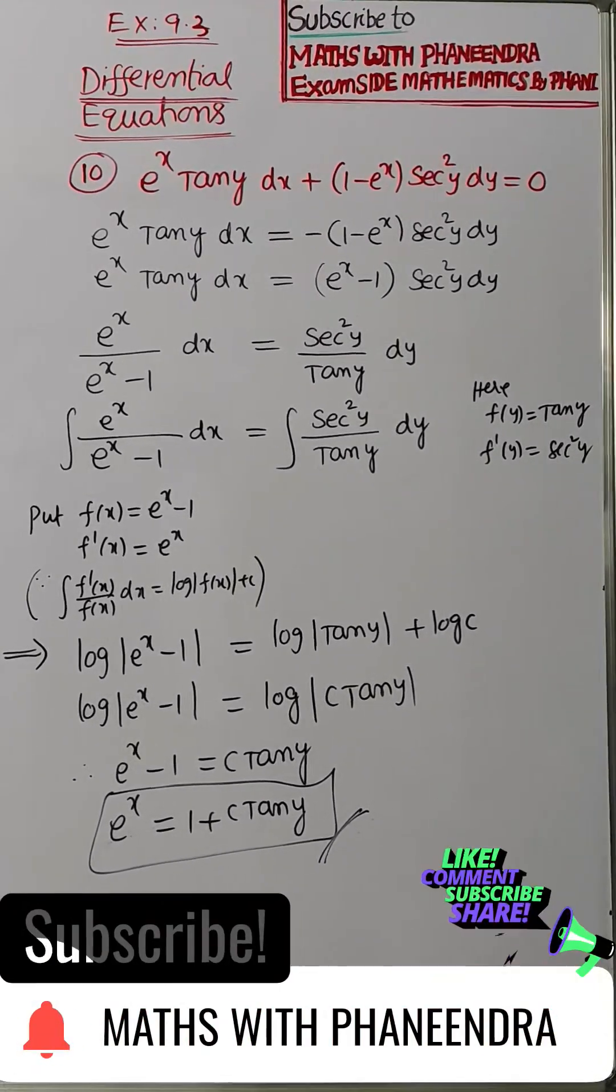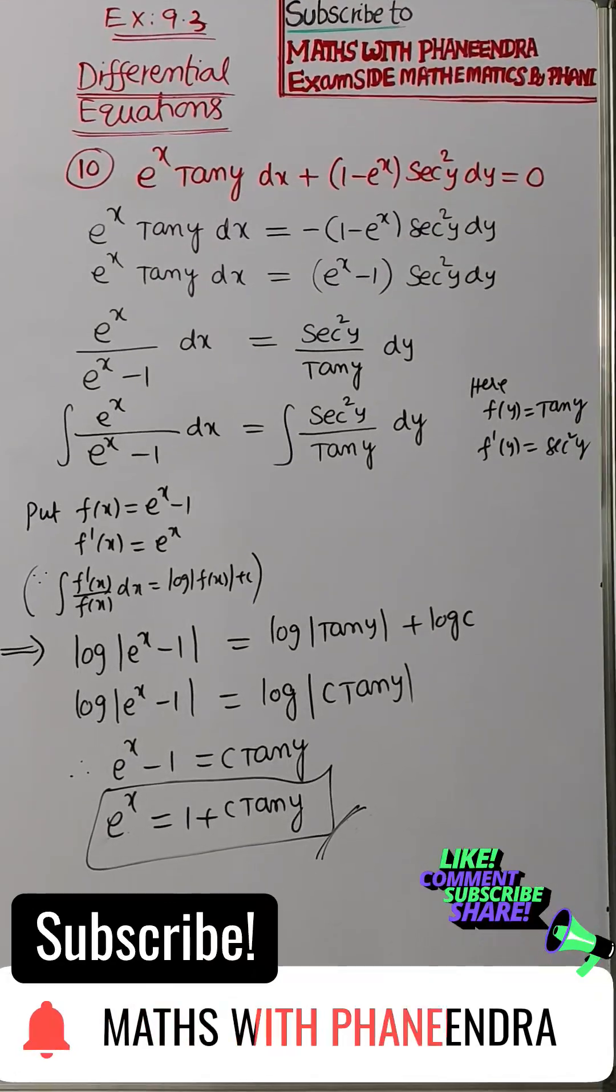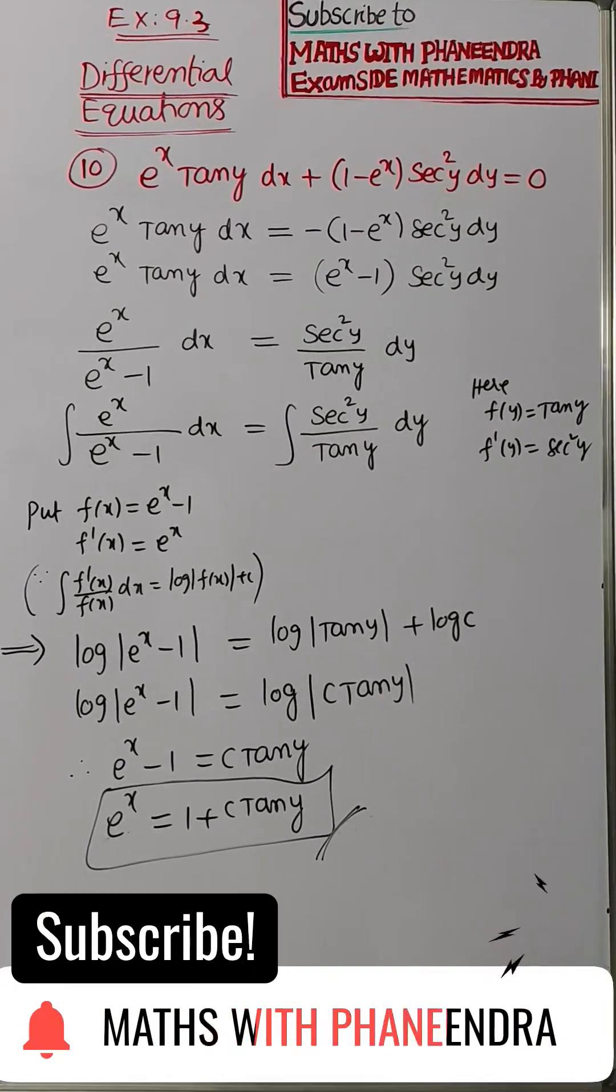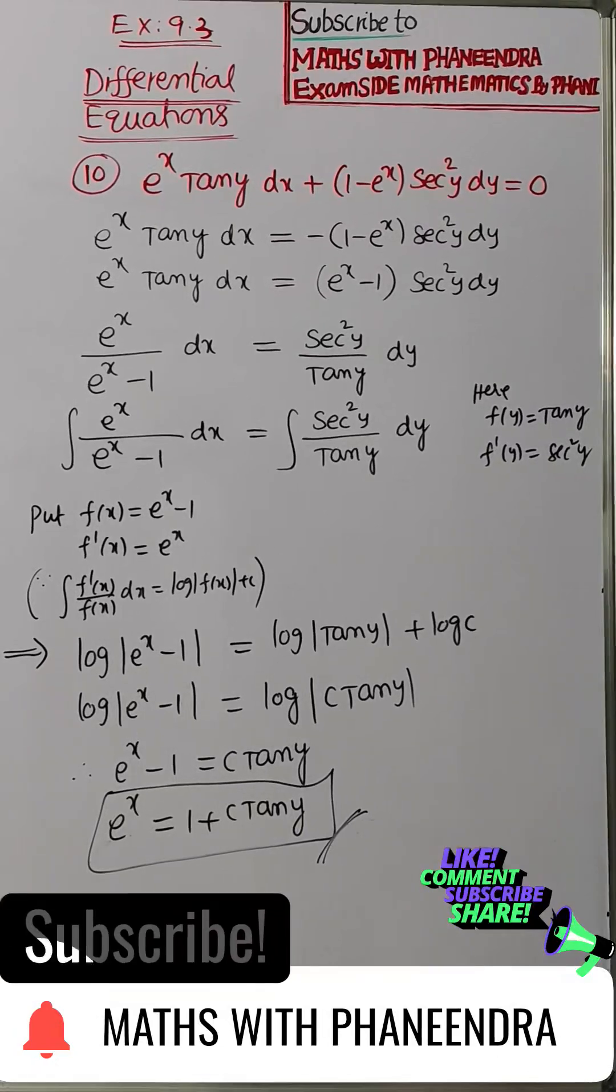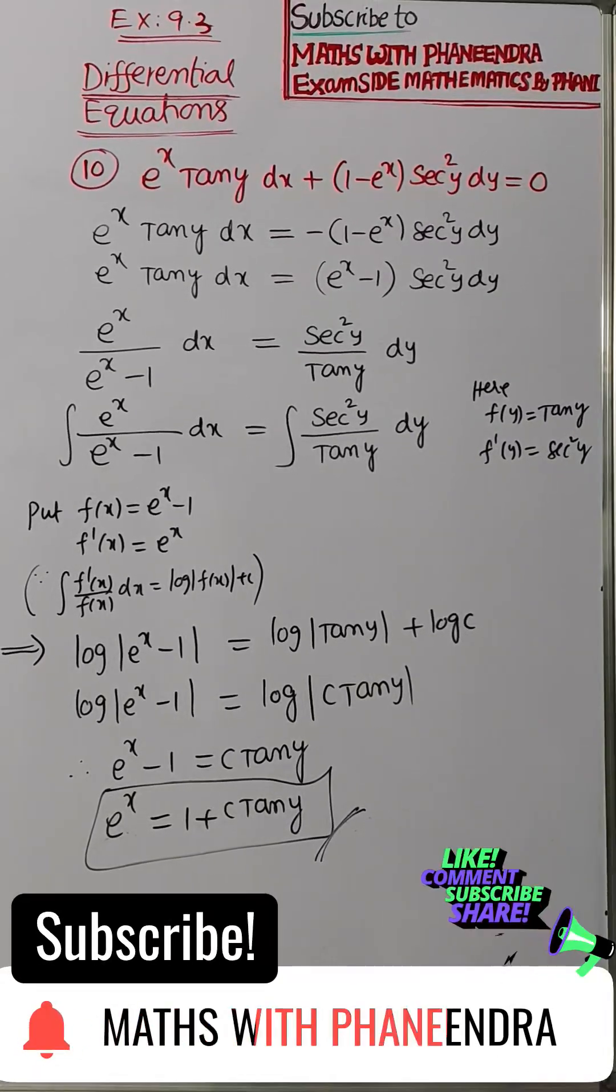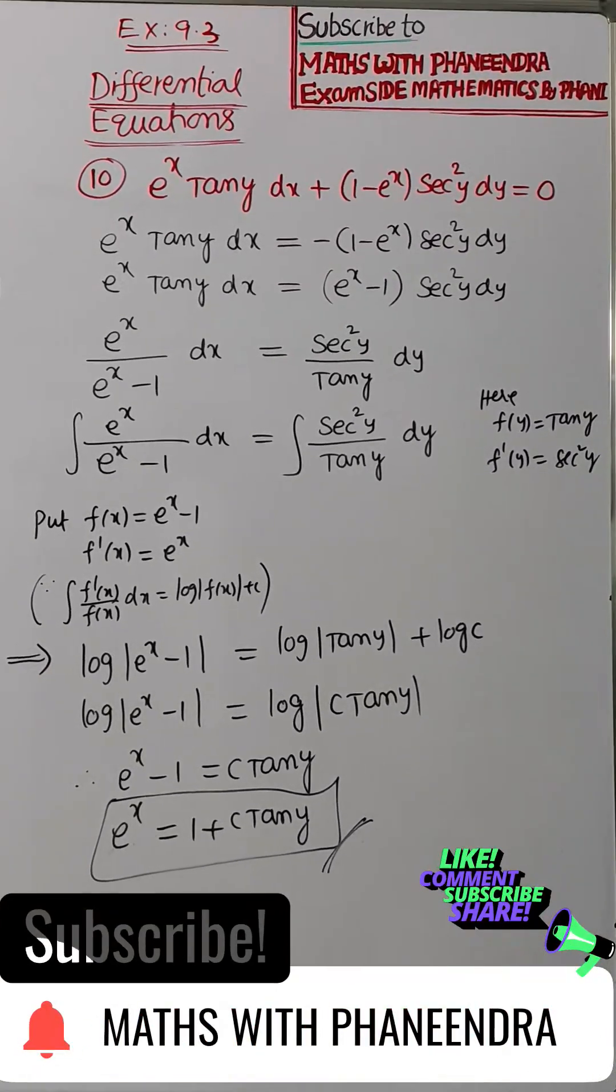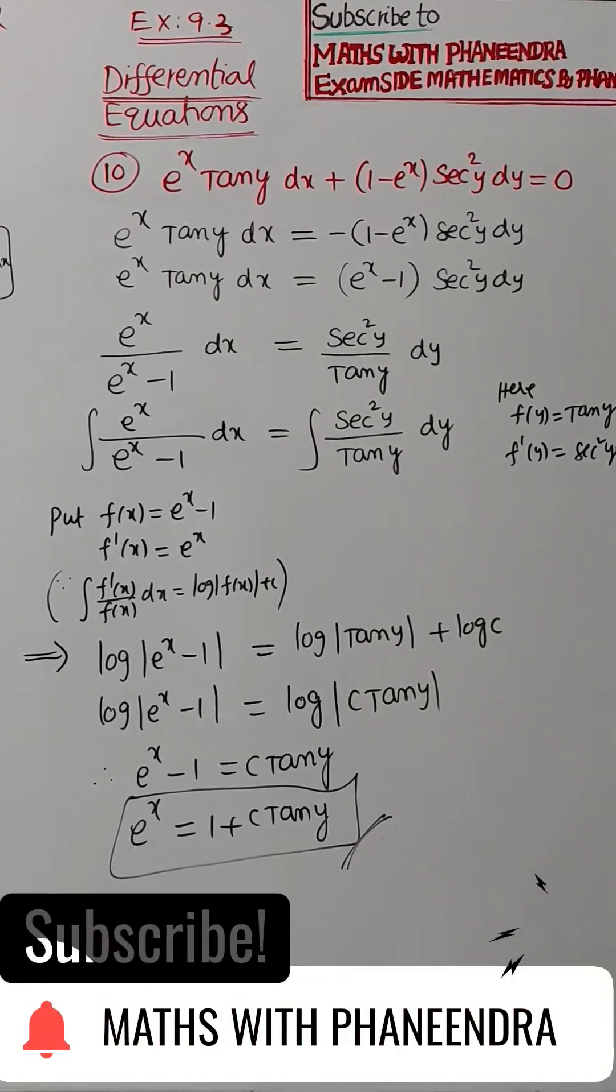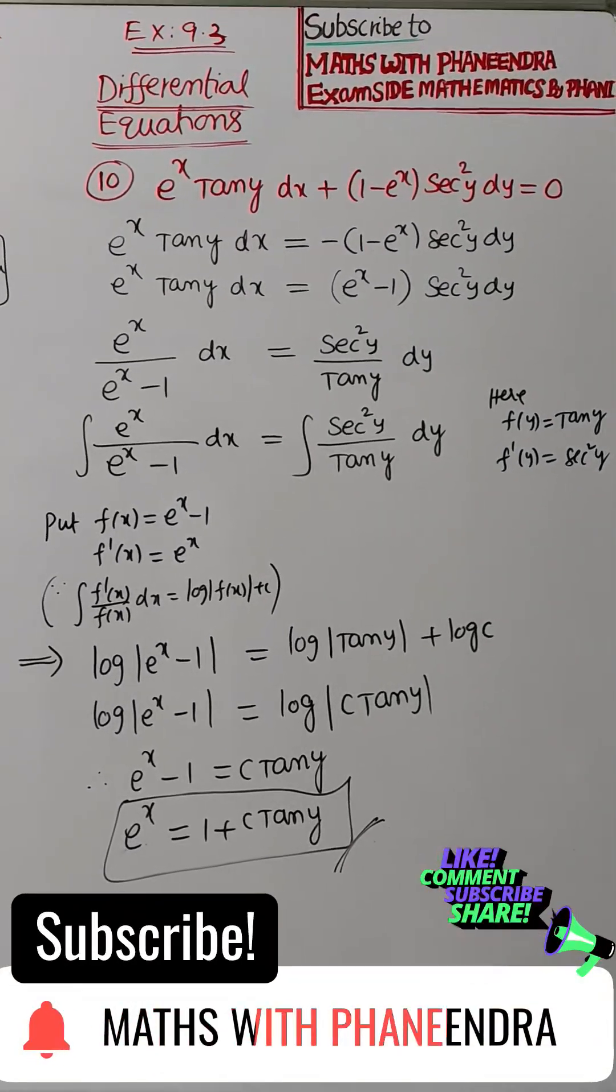taking integration on both sides, so integral e power x by e power x minus 1 into dx equal to integral secant square y divided by tan y. So here both LHS and RHS sides, denominator e power x equal to e power x minus 1.